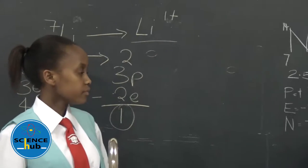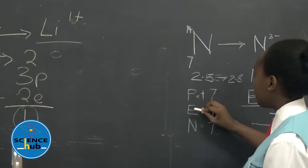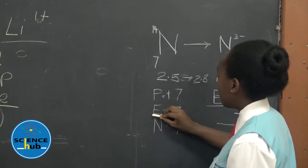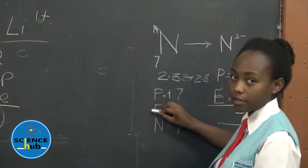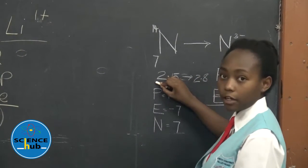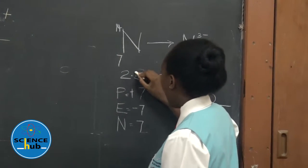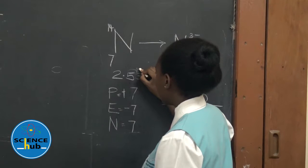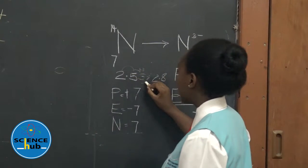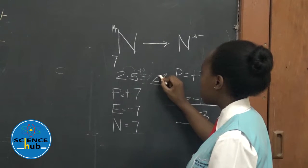Using nitrogen as an example, we will take the protons which are seven, electrons which are seven, and neutrons which are seven, but we will focus on protons and electrons. As the electronic configuration is 2-5, we will find it easier to add 3 to this electronic configuration instead of losing 5, in order to make the atom stable, therefore forming 2-8.